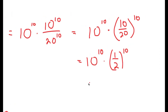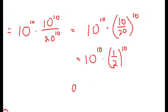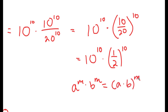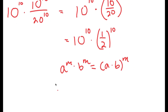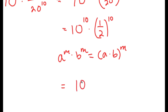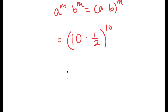Finally, using the property a to the power of m times b to the power of m equals a times b to the power of m, this turns into 10 times 1 half, to the power of 10, which is equal to 5 to the power of 10.